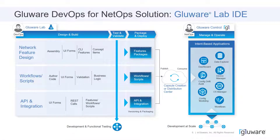We've mainly talked about and focused on this aspect right here, which is Glueware Control. It's largely used by your net ops — your network operations folks, your network engineers — and they are consuming our suite of applications and implementing automation at scale across the network.